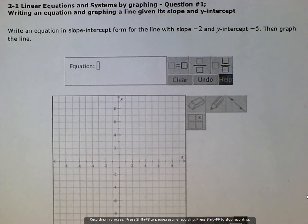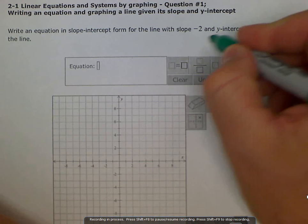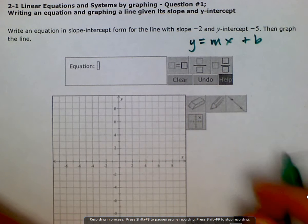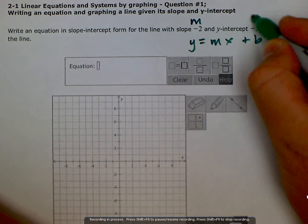As long as we know what slope-intercept form looks like, which is y equals mx plus b, then they give us the slope, which is our m, and they give us our y-intercept, which is our b.